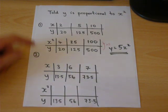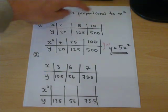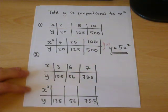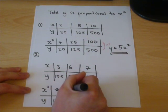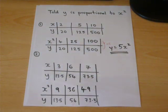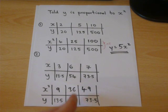Second example. We're still told y is proportional to x squared. So it's not the x values you care about. It is the x squared values. And if you then do 13.5 divided by 9, you get 1.5. If you do 54 divided by 36, you get 1.5.